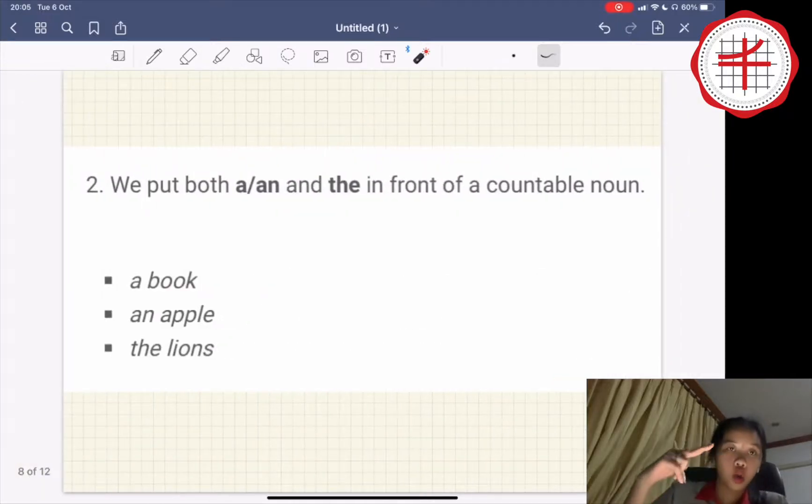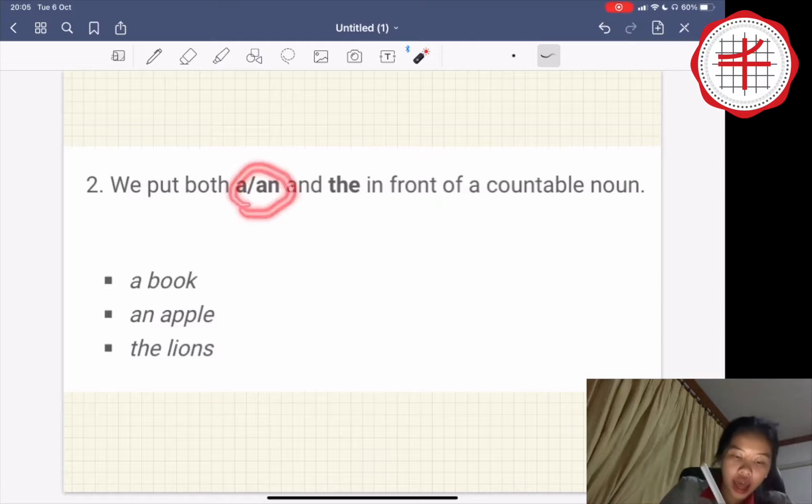Number two, we put both a and the as you can see in front of a countable noun. For example, a book, an apple, the lion.